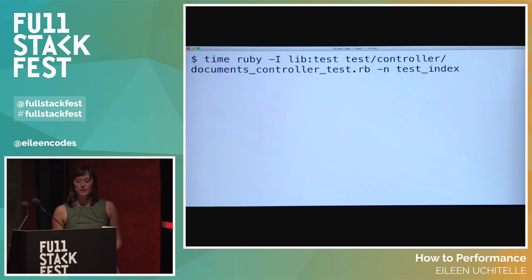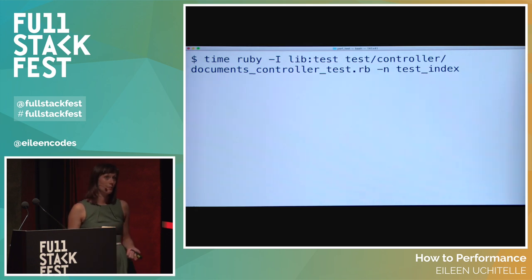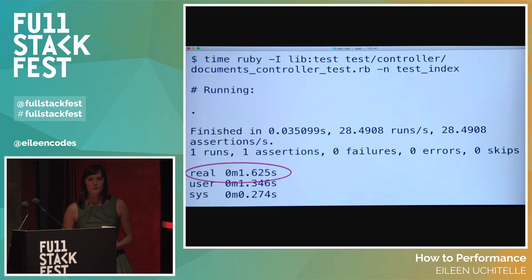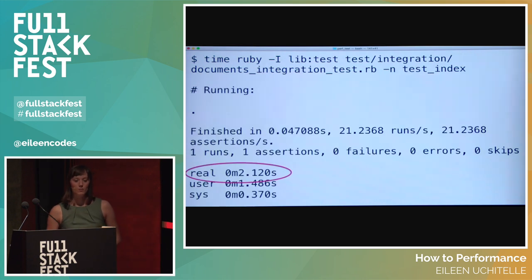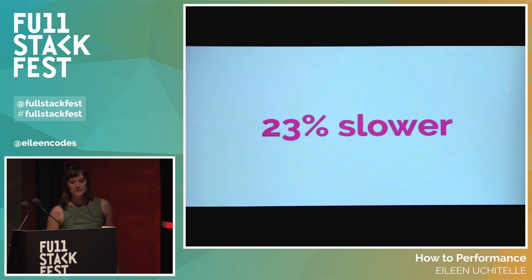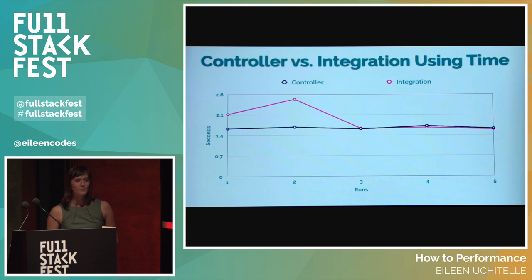I double-checked DHH's assertion that integration tests were 20 to 40 percent slower than controller tests — it was actually true. He was basing this off the time they took to execute, so I first looked at that knowing it wasn't going to be my real baseline. I ran the single controller test and found that it took 1.625 seconds of real time. I then ran the corresponding integration test, which took 2.12 seconds of real time. This calculated to integration tests being about 23 percent slower — a huge difference. I then ran each of the tests five more times and got interesting results.